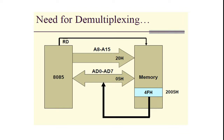In this demultiplexing concept, the 8085 has 16 address lines. Out of these, A15 to A8 are called the higher order address bus, whereas A7 to A0 are called the lower order address bus. A15 to A8 are independent and not shared with any other bus, whereas A7 to A0 and D7 to D0 are multiplexed — meaning the same lines are used for both address and data.